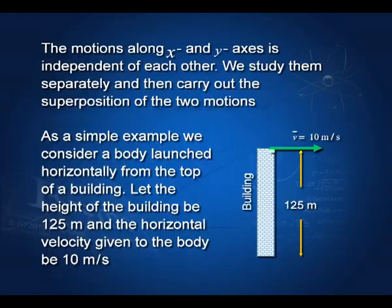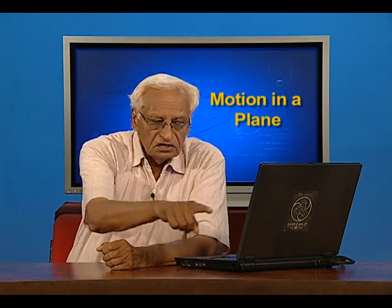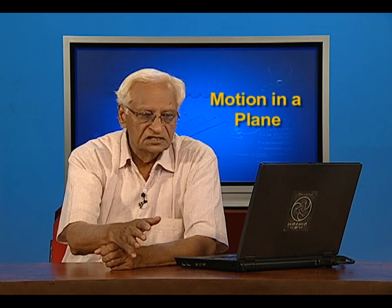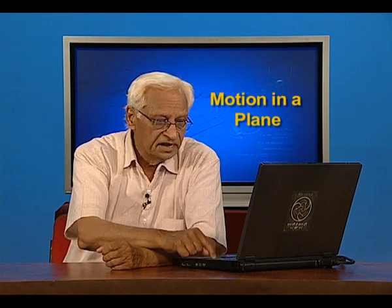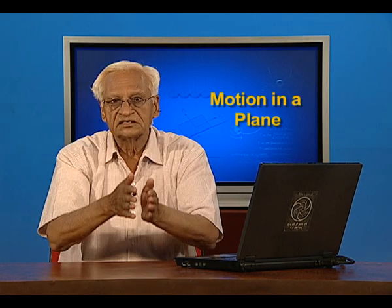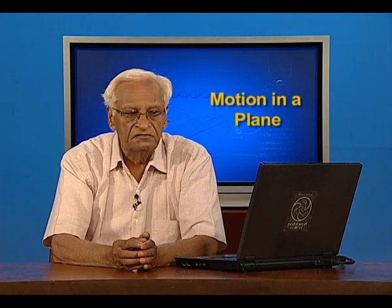As an example, we take a building which is 125 meters high. From the top of that building, we launch an object horizontally with a velocity of 10 meters per second. In the horizontal direction, there is no other force, so the object would move 10 meters in one second, 20 meters in two seconds, and so on. However, in the vertical direction, there is the force of gravity, and therefore the distance covered vertically is given by y equal to half g t squared.